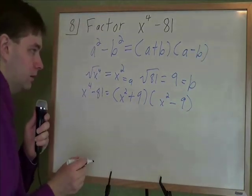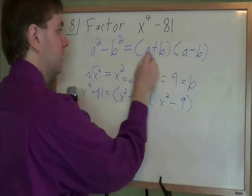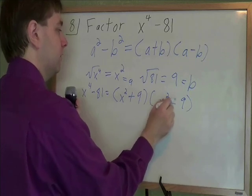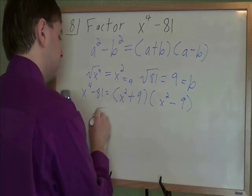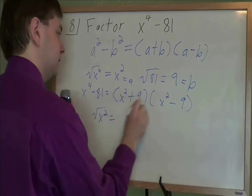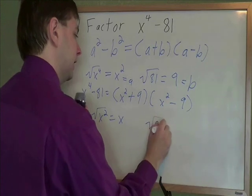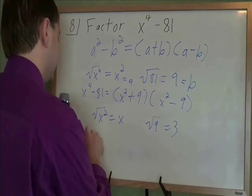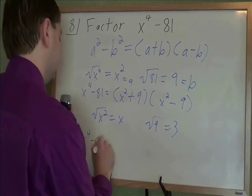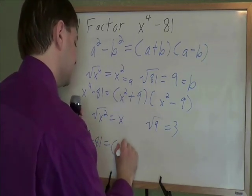So x to the fourth minus 81 is x squared plus 9 times x squared minus 9. But then we're not done yet. Turns out x squared minus 9, we can use this same formula again because we're subtracting, and both of these are perfect squares that have nice happy square roots. The square root of that first piece, the x squared, would be plain old x. And the square root of 9 would be 3.